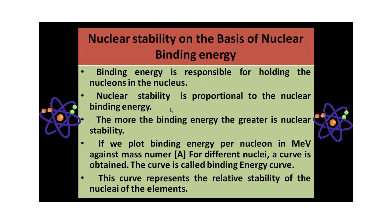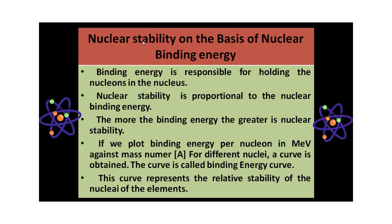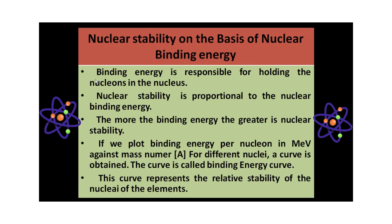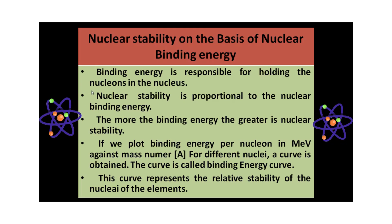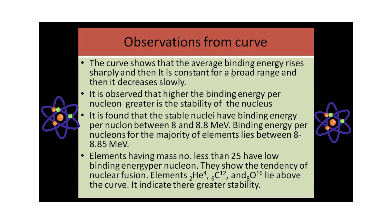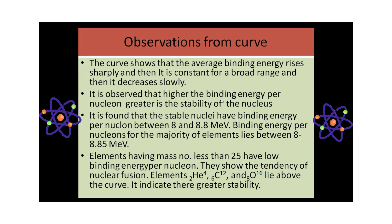Nuclear stability is proportional to nuclear binding energy. More the binding energy, greater is the nuclear stability. We plot the binding energy per nucleon in millielectron volts against the mass number for different nuclei — a curve is obtained, known as the binding energy curve. This curve represents the relative stability of nuclei with binding energy. If we carefully observe the curve, we find that the average binding energy rises sharply at first, then remains constant over a broad range, and then decreases slowly. Higher binding energy per nucleon means greater stability of the nucleus.